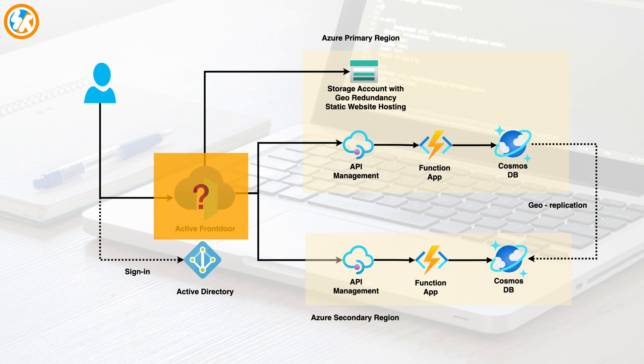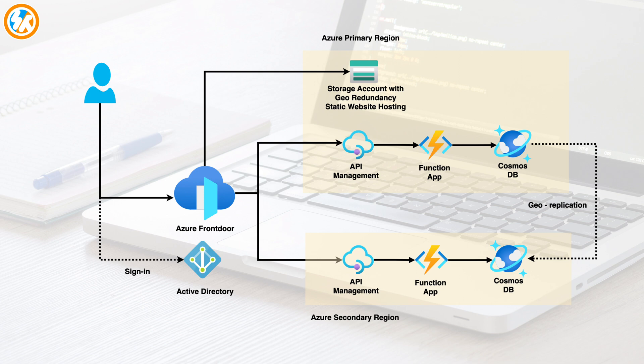The updated architecture will look like this. We have the Function app, API Gateway, and Cosmos DB instances deployed in two regions. The storage account is configured to be geo-redundant, and Azure Active Directory will provide authentication. Azure Front Door is the service we can use for load balancing and automatic failover to the second region in case of region failure. It has 99.99% availability. Front Door can detect the health of each region and manage the failover so that users have a seamless experience even when one region goes down. On top of that, Front Door can act as a content delivery network for the single page web app, also with 99.99% availability.